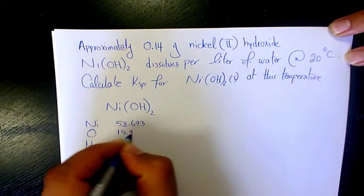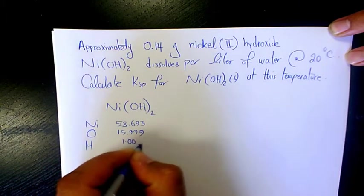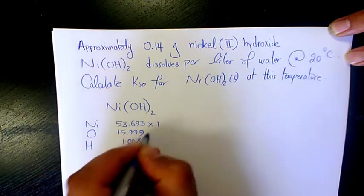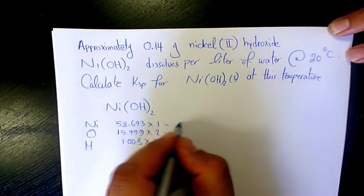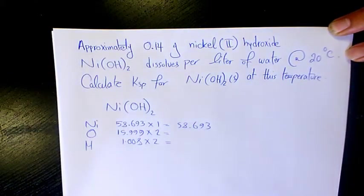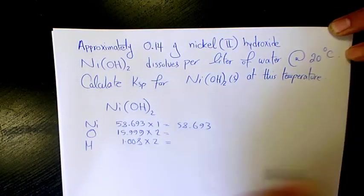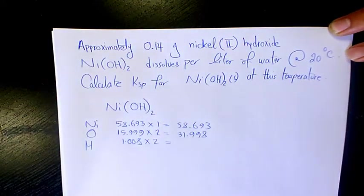Oxygen is 15.999, and hydrogen is 1.008. That's one nickel, two oxygens, and two hydrogens. So we have 58.693 for nickel, 15.999 times 2 which is 31.998 for oxygen, and 1.008 times 2 which is 2.016 for hydrogen. When you add them all up...